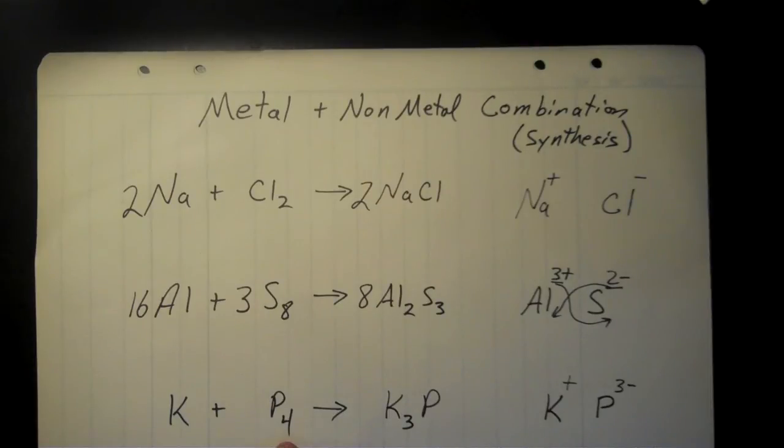So this one is actually fairly easy to balance. I've got four phosphorus right here, only one on the product side. So I'm going to put a 4 out in front of that. And then 4 times 3 is 12 potassiums. So we just need to put a 12 out in front of the potassium there. And that equation is balanced. And so that's how we balance metal nonmetal combination or synthesis reactions.